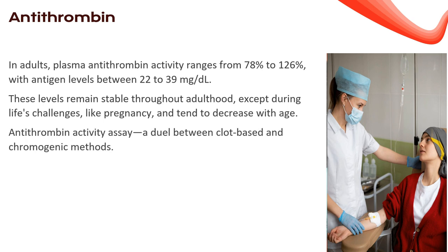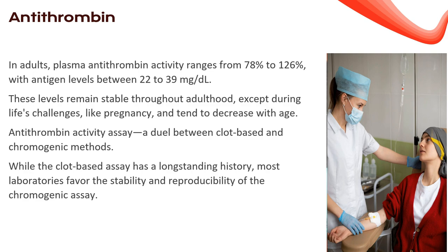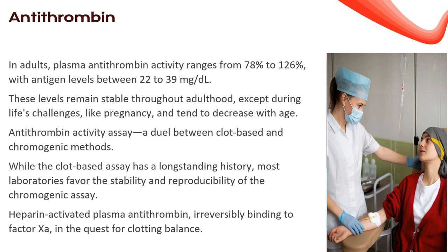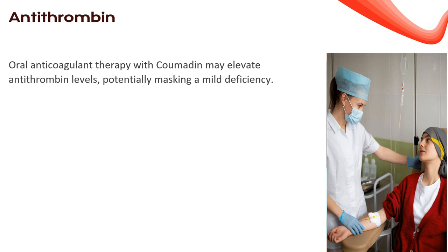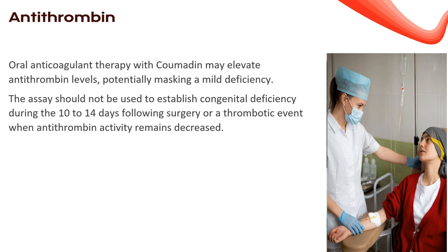The antithrombin activity assay uses either clot-based or chromogenic methods; most laboratories favor the stability and reproducibility of the chromogenic assay. Heparin-activated plasma antithrombin irreversibly binds to factor Xa in the chromogenic assay. The antithrombin antigen assay is a turbidometric microparticle immunoassay — latex microbeads coated with antithrombin antibodies form larger aggregates in the presence of antithrombin, and the rate of light absorption change reveals antithrombin concentration. Oral anticoagulant therapy with Coumadin can potentially mask mild antithrombin deficiency, so caution is needed during 10–14 days post-surgery or thrombotic events.